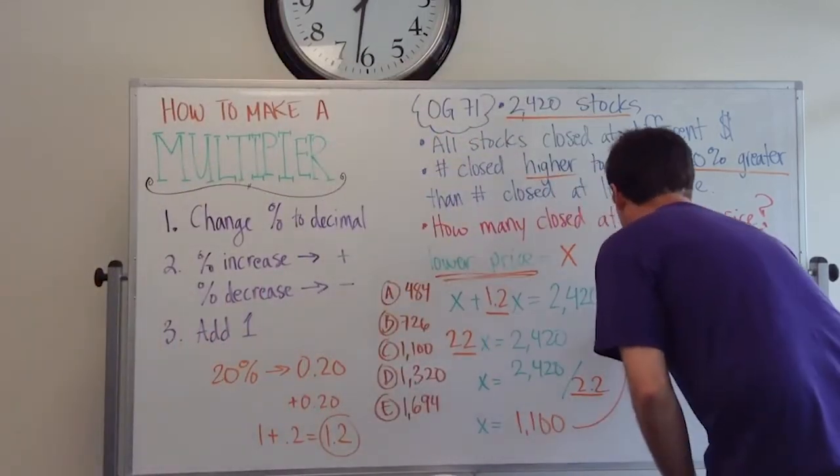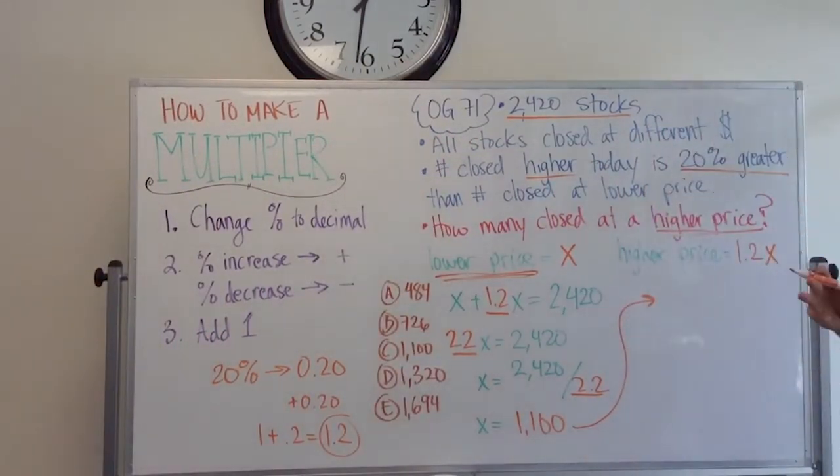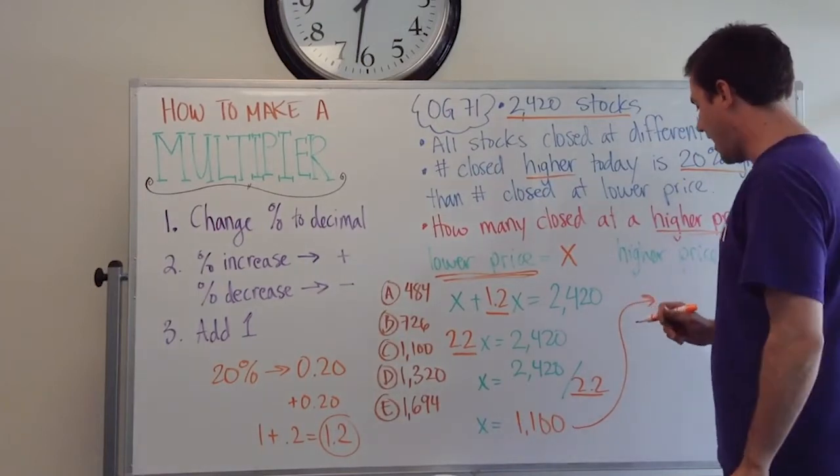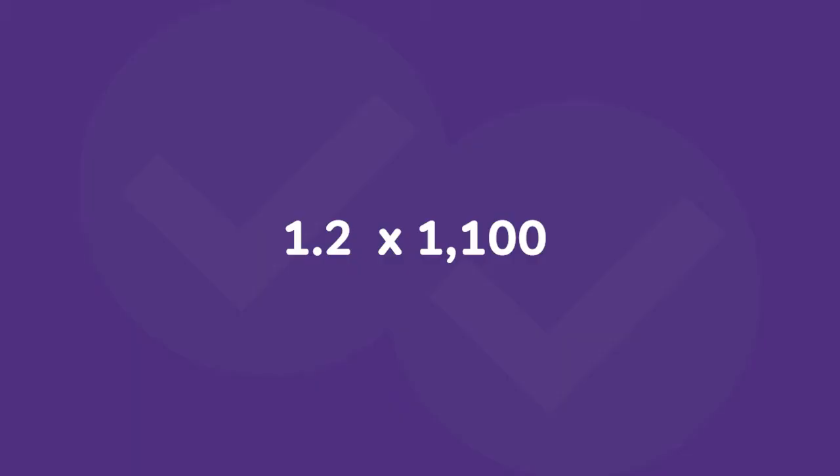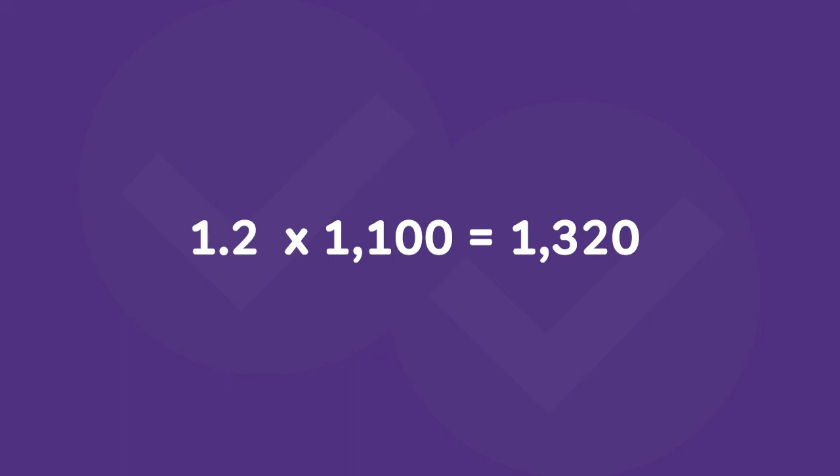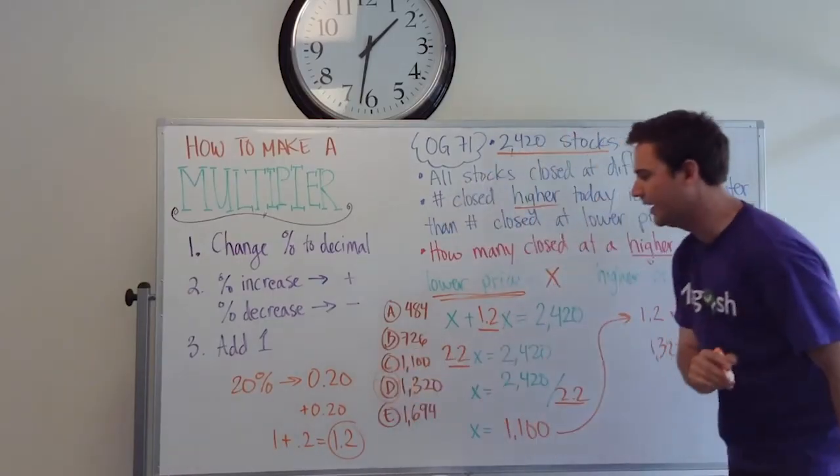So we have one more step to do. And the GMAT loves to do this kind of stuff. Put one extra step at the end and see if you're actually paying attention. So we got 1.2 times 1100, and that's going to equal 1320. So our answer here is actually going to be D.